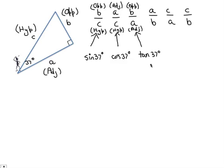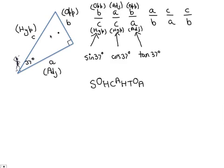So: sine 37 = b over c = opposite over hypotenuse; cos 37 = a over c = adjacent over hypotenuse; tan 37 = b over a = opposite over adjacent. How on earth do we remember this? There is one very easy way — one word: SOH-CAH-TOA. The sine is the opposite over the hypotenuse, the cosine is the adjacent over the hypotenuse, the tan is the opposite over the adjacent. All the information you need is in this word.